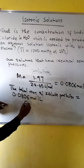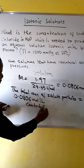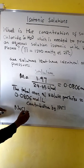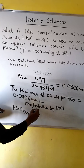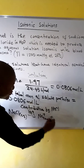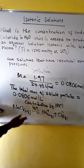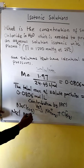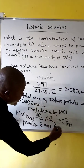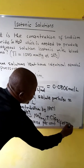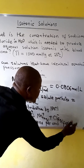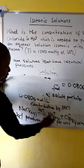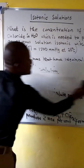Now, what is the contribution of sodium chloride? We know that sodium chloride will dissociate in water to form sodium ion plus chloride ion. So sodium chloride produces two ions per formula unit — one sodium ion and one chloride ion — for a total of two.